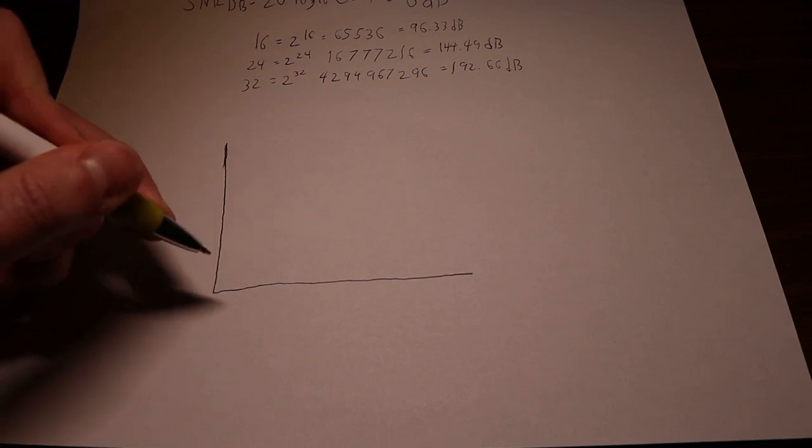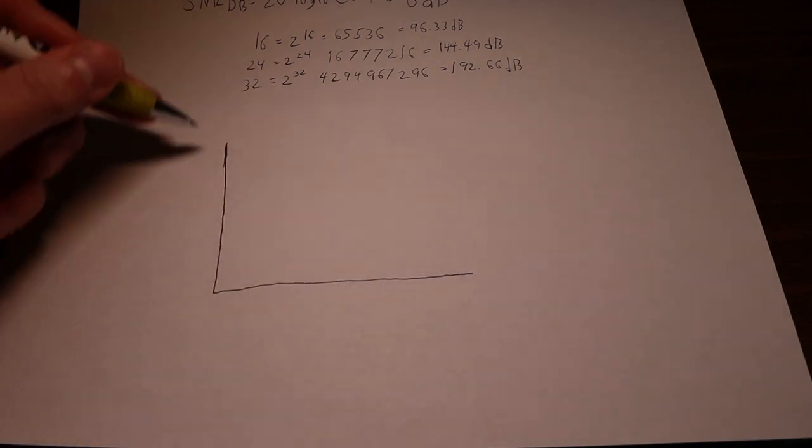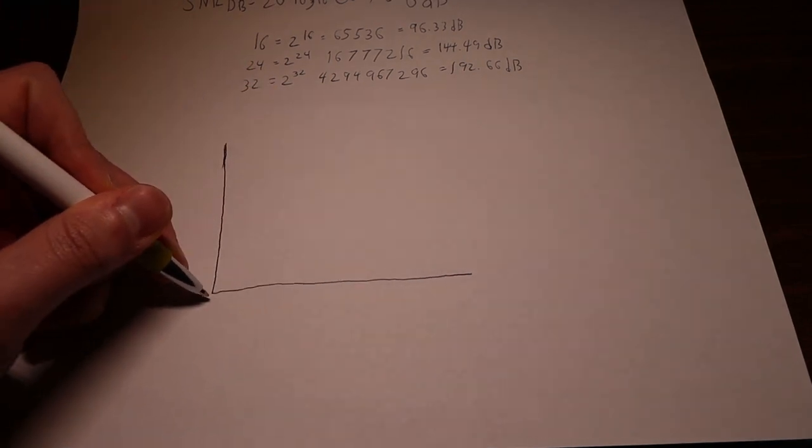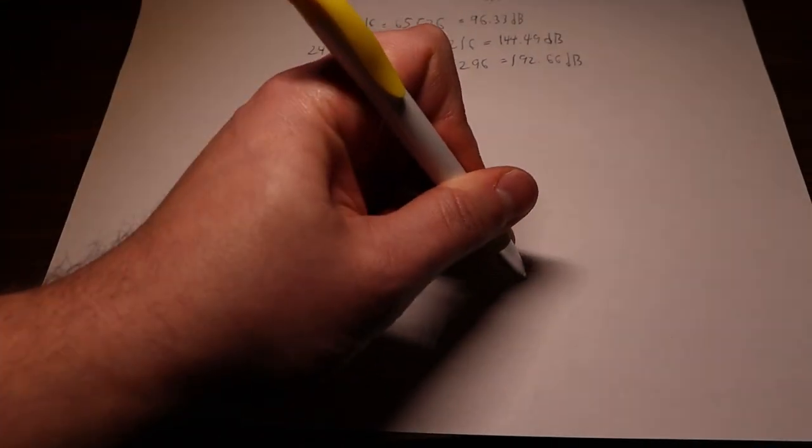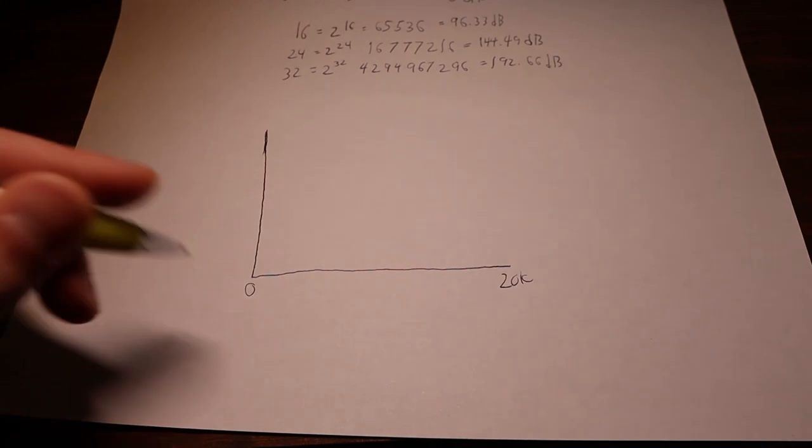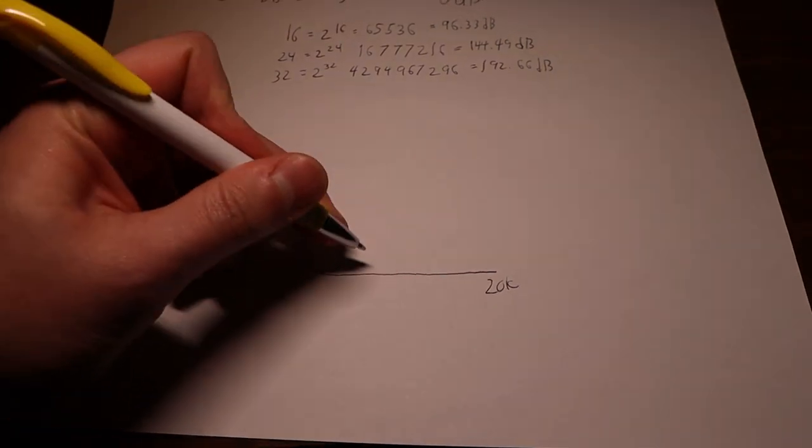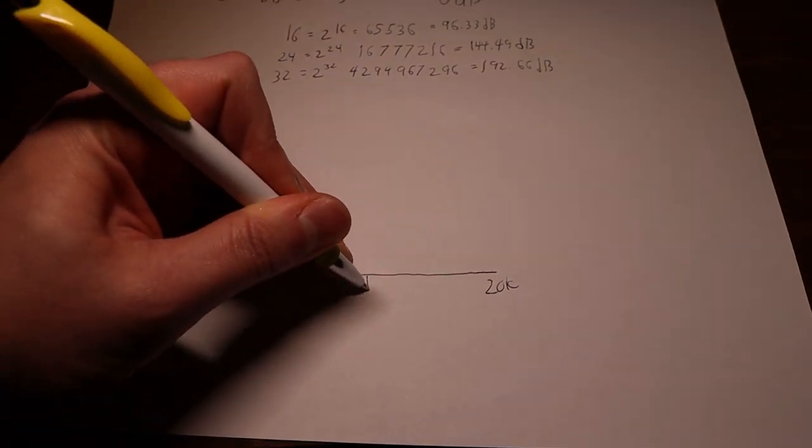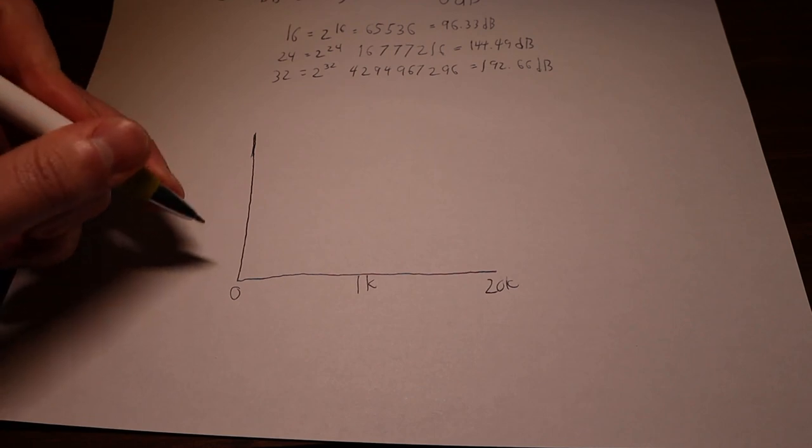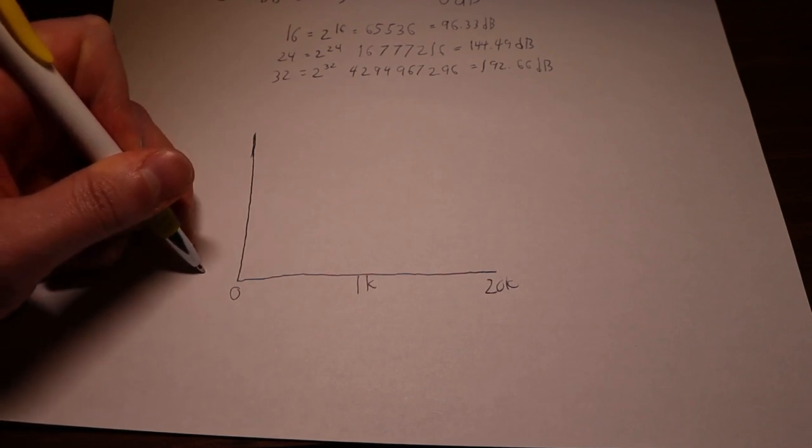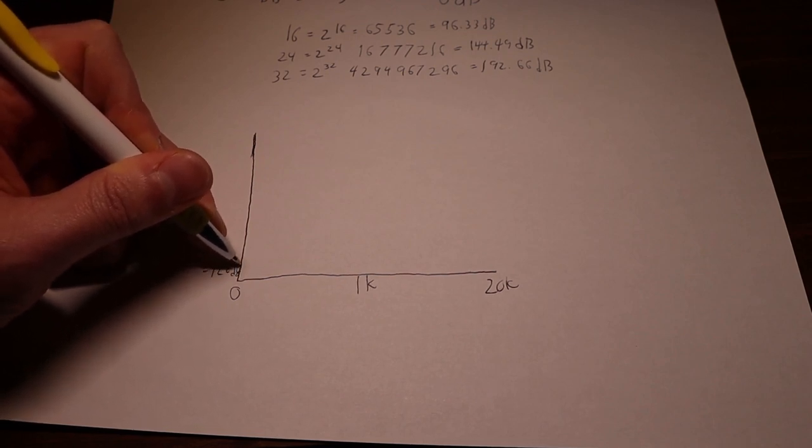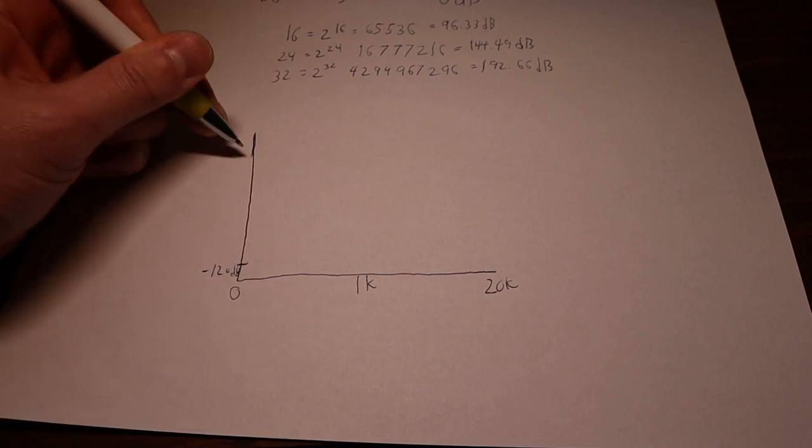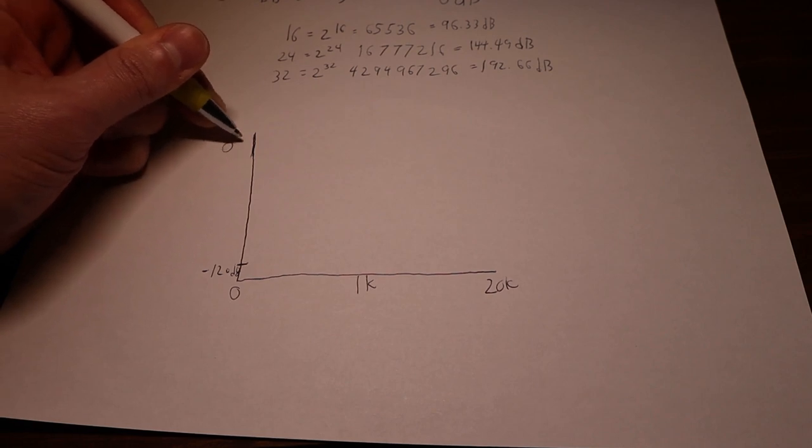So we're going to make a graph here and just express this in frequency and then signal. Let's just say for now on this part of the graph we're going to have 0 to 20k. Doesn't really matter all the in-between values. We'll just put in the middle here 1k because that's typically a good test tone. And then over here we'll put negative 120 dB and then 0 dB up here.